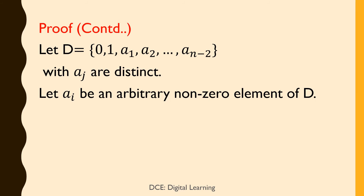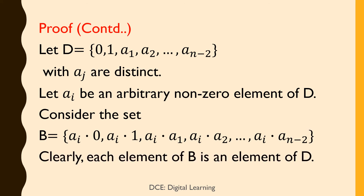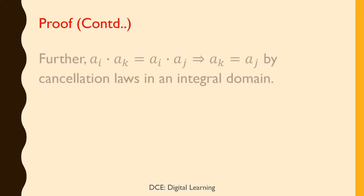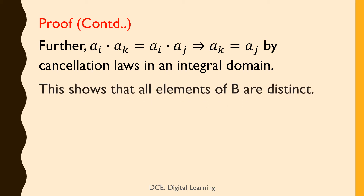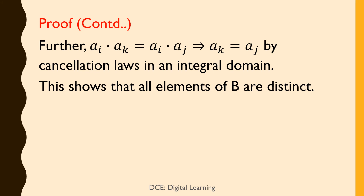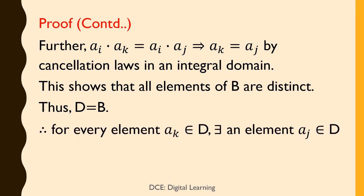Let aᵢ be an arbitrary non-zero element of D. Consider the set B = {aᵢ·0, aᵢ·1, aᵢ·a₁, aᵢ·a₂, ..., aᵢ·aₙ₋₂}. Clearly, each element of B is an element of D. Further, aᵢ·aₖ = aᵢ·aⱼ implies aₖ = aⱼ by cancellation laws in an integral domain. This shows that all elements of B are distinct. Thus D = B. Therefore, for every element aₖ belonging to D, there exists an element aⱼ belonging to D such that aₖ = aᵢ·aⱼ.